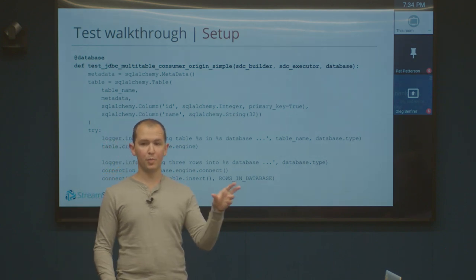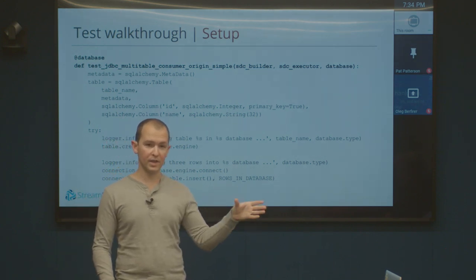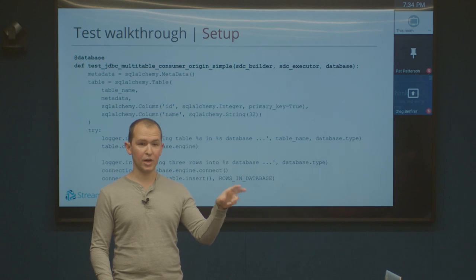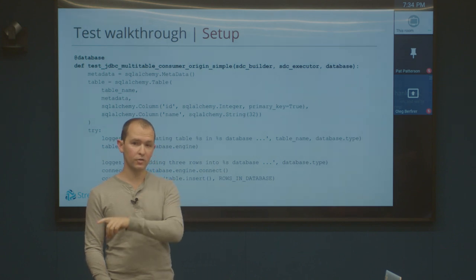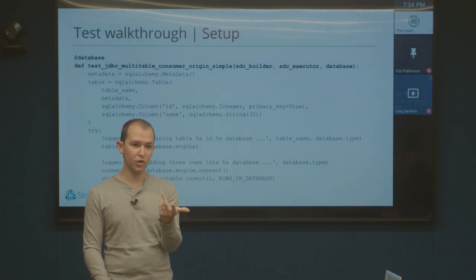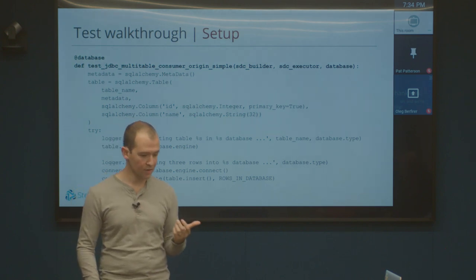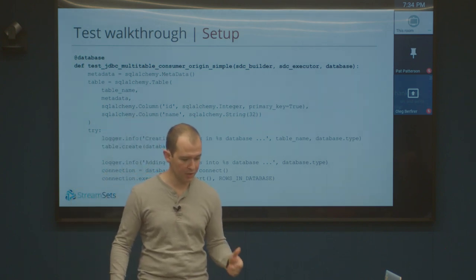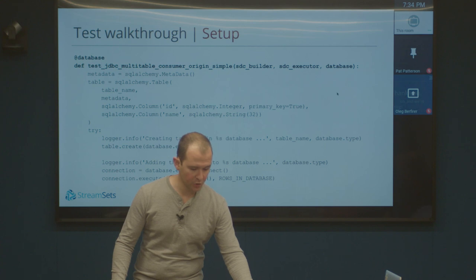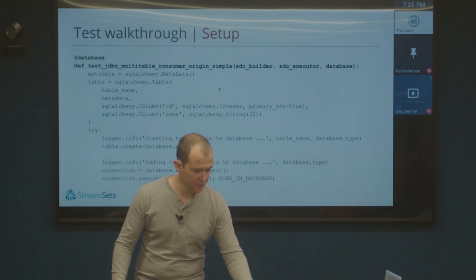But if you actually tell us on the command line to run it from 3.0 to 3.5 snapshot — or whatever release you want — it'll say: in that case, I'm only going to build the pipeline in one version of SDC, I'll export it, and then I'm actually going to run it in a later version. And I'll make sure that the upgrade logic we have built into SDC actually works as intended. This slide shows pretty much most of it.